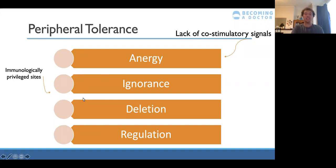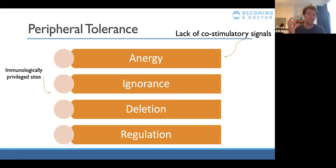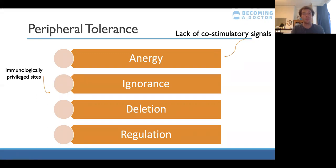Second, ignorance — T cells and B cells never come into contact with certain areas of the body. For example, within the eye — a sealed-off system — there's little chance a pathogen gets in, so T cells and B cells don't enter there. This is known as an immunologically privileged site. Similarly, the blood-brain barrier means T cells and B cells rarely reach the brain, protecting against autoimmune attack.